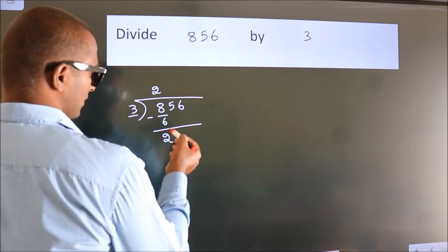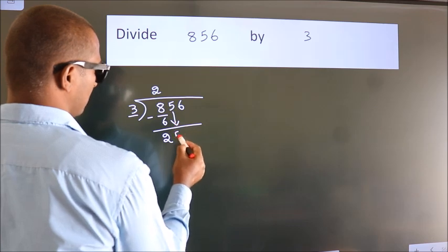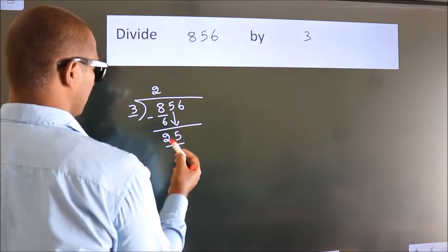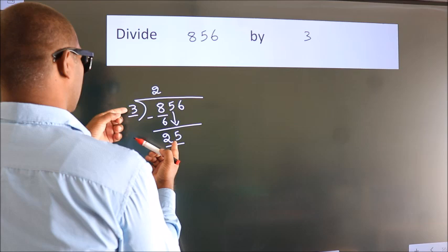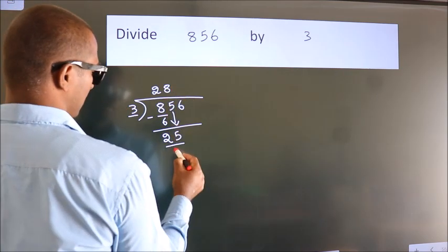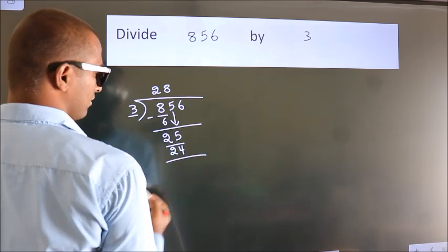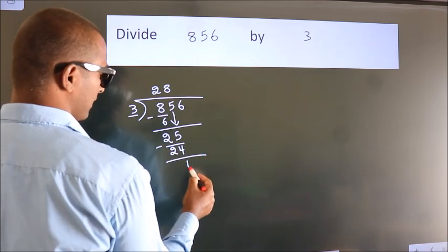After this bring down the beside number. So 5 down. So 25. A number close to 25 in 3 table is 3 8's 24. Now we subtract. We get 1.